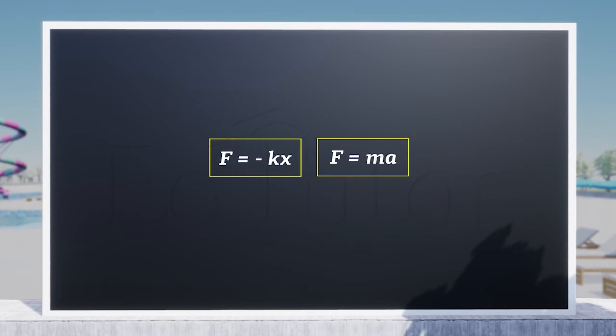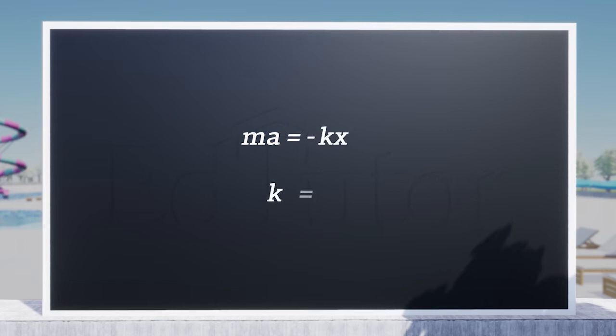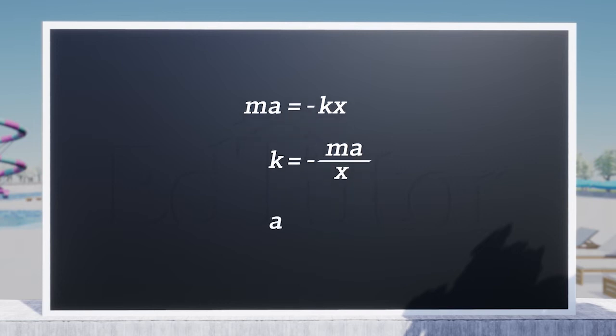By comparing Hooke's law and Newton's second law, we get ma = -kx, where k = -ma/x. If we solve this for acceleration a, we get a = -kx/m.